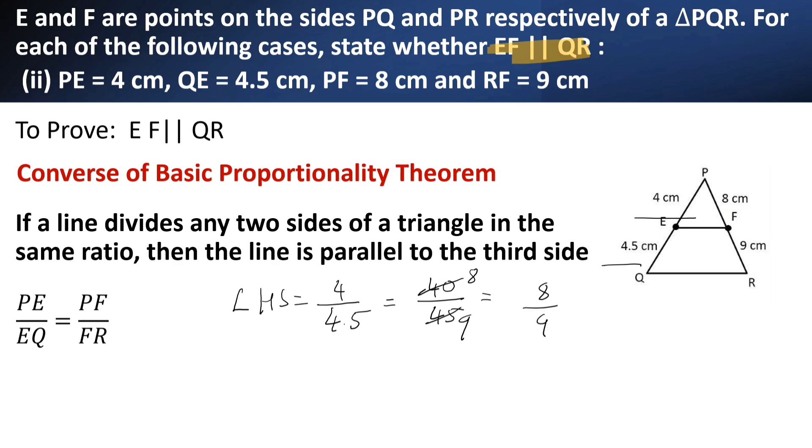No need to simplify it further. Then what is RHS? 8 by 9. LHS is also 8 by 9, RHS is also 8 by 9. So, EF is parallel to QR.